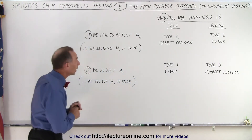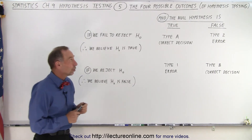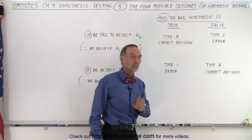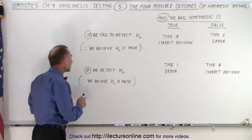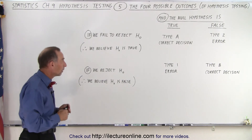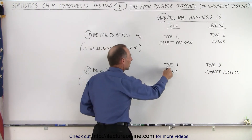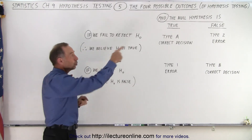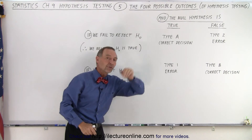Now, what if we fail to reject the null hypothesis, and the null hypothesis is false — we should have rejected it because it's false, but we didn't reject it? We'll call that a type 2 error. Or, let's say we actually reject the null hypothesis because we believe that it's false, but it's actually true — we call that a type 1 error. So, a type 1 error is where we reject the null hypothesis but it's actually true, and a type 2 error is where we failed to reject it but it's actually false — we should have rejected it.